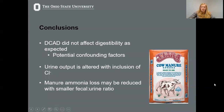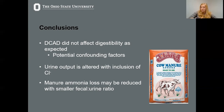The conclusions we can draw from this study are: first, DCAD did not affect digestibility as expected, but likely because of the confounding factor of linoleic acid. Second, urine pH remains quite influenced by DCAD, but urine output is also altered with the inclusion of chloride rather than just sodium or potassium. Lastly, manure ammonia loss may be reduced further with a smaller fecal-to-urine ratio, but we would need more research on what the ideal fecal-to-urine ratio might be and how much manure ammonia loss would actually result.